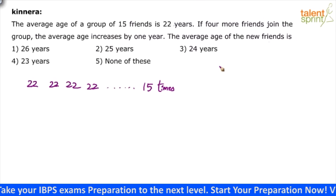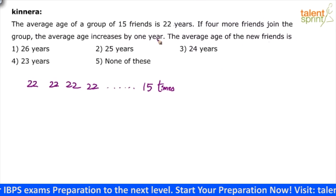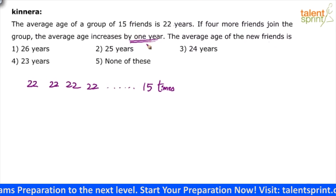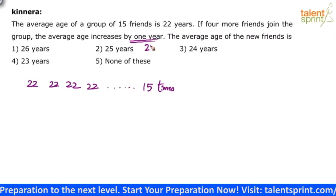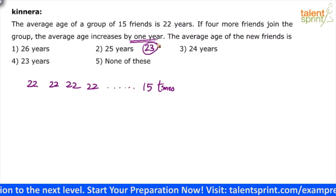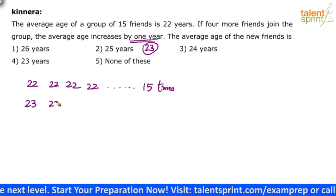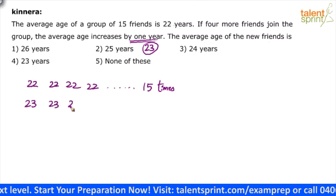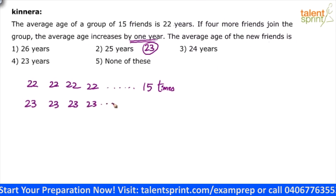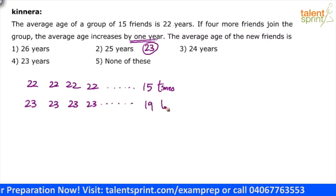Now four more friends have joined and the average increases by one year. Average increases by one year means 22 plus 1 — now 23 is the average. So how many 23 values do we have? 23, 23, 23, and so on — 19 times.